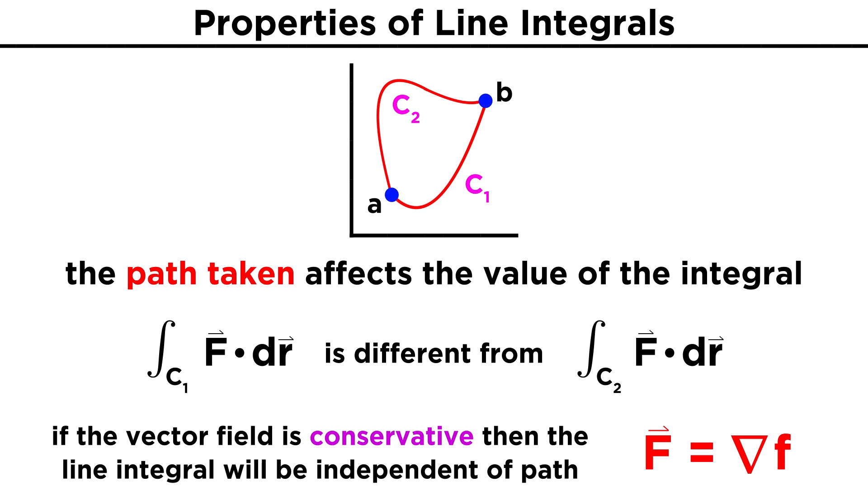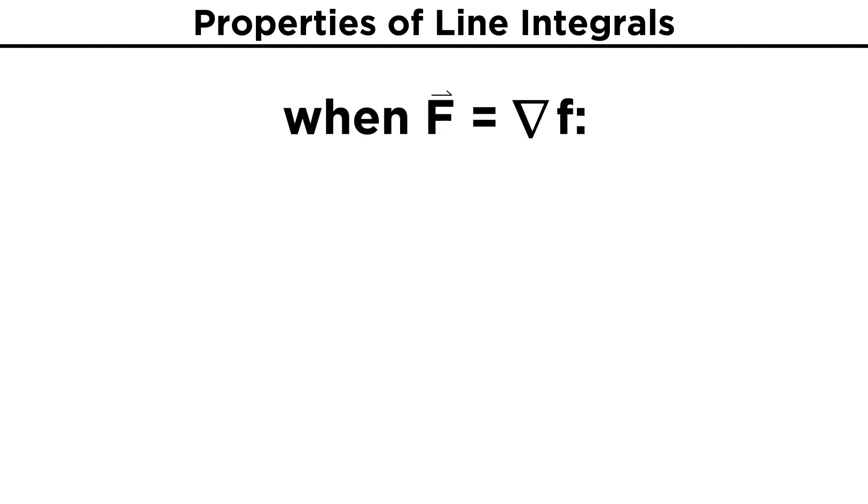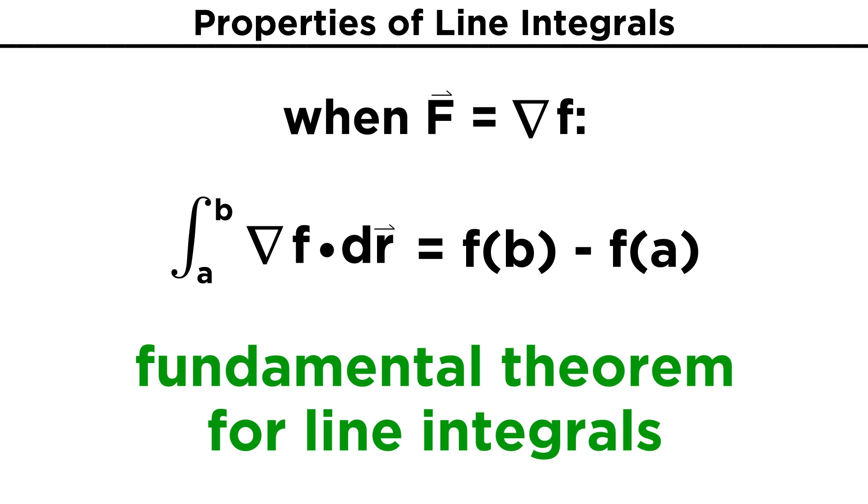Remember, this means that the vector field can be written as the gradient of some function f. This is because the line integrals of gradient vectors have a special property to them. The integral over a curve C of the gradient of f dot dr equals the function f evaluated at the endpoint B minus f evaluated at the starting point A. This expression is what is known as the fundamental theorem for line integrals.